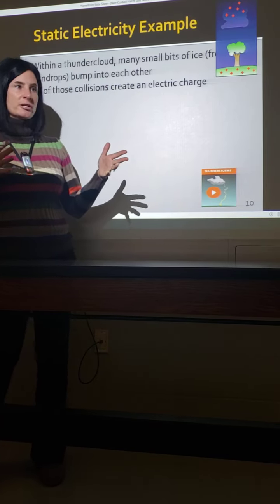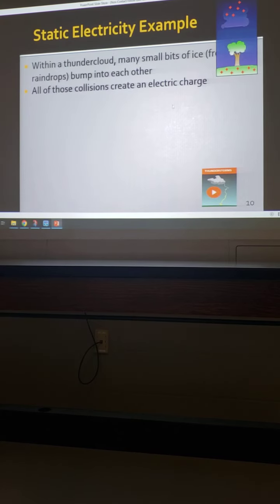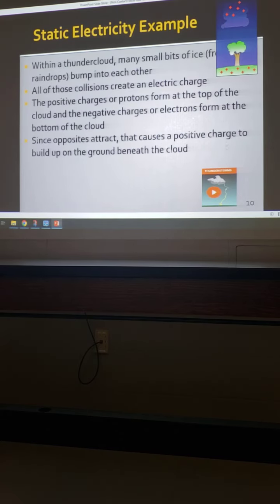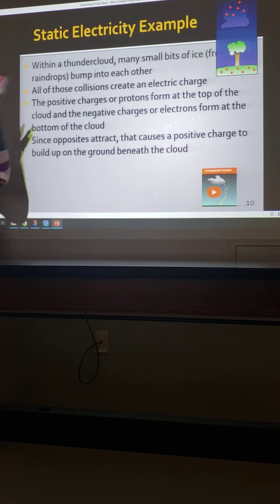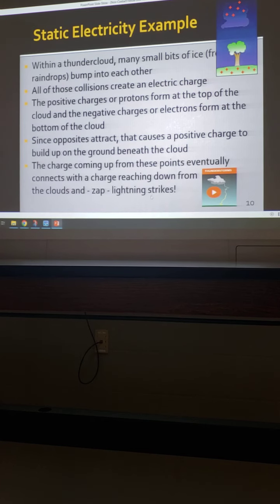'Discharge' means to get rid of the charge — the electrons and protons mix back up, evening things out temporarily. Since opposites attract and a charge has been built up, they reach a critical point where they discharge, eliminating that unequal positive-negative component and becoming neutral again. The charges reach down and join each other, and we get a lightning strike.